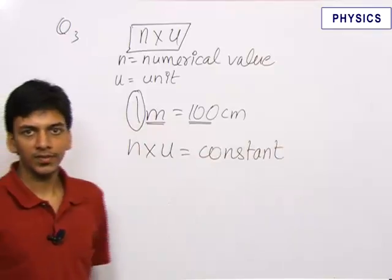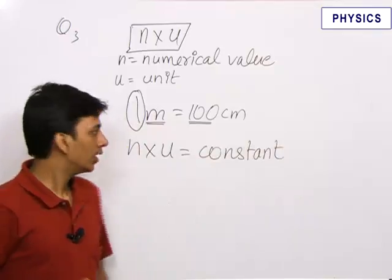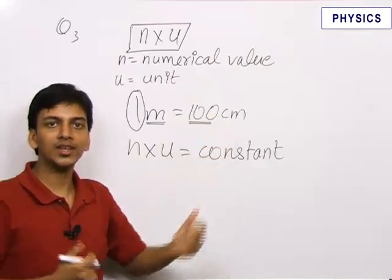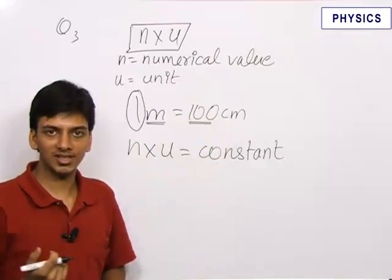For any physical quantity, if we change the unit, subsequently the numerical value changes. Eventually, the product of n into u always remains the same.